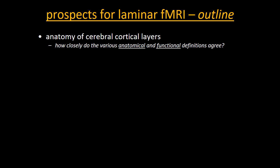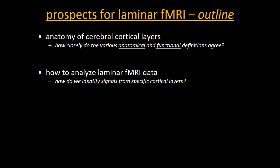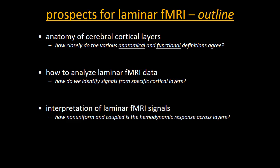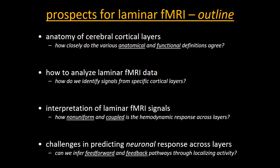With that brief introduction, I'd like to give a quick outline. First, I'll review the anatomy of cortical layers and ask how closely the various anatomical and functional definitions agree. Next, I'll talk about how to analyze laminar fMRI data and ask how we identify signals from specific cortical layers. Then I'll address the interpretation of laminar fMRI signals — how non-uniform and how coupled are the hemodynamic signals across layers? Finally, I'll cover challenges in predicting neuronal responses and ask whether we can infer feed-forward and feedback pathways through laminar fMRI.